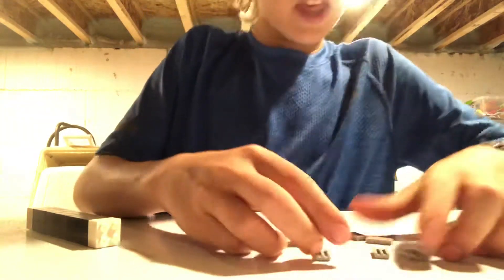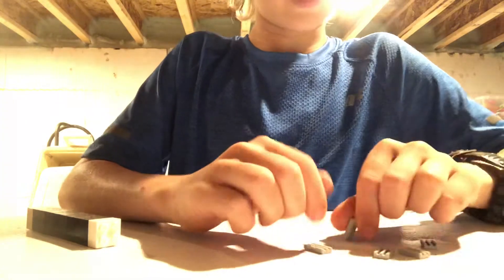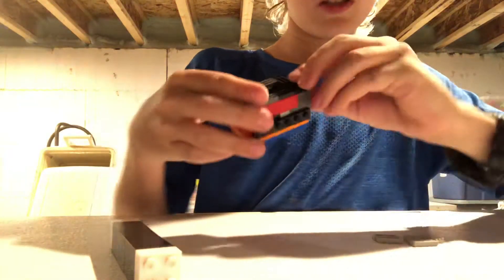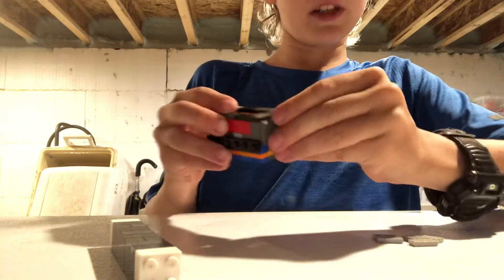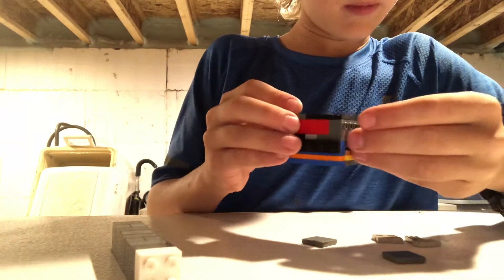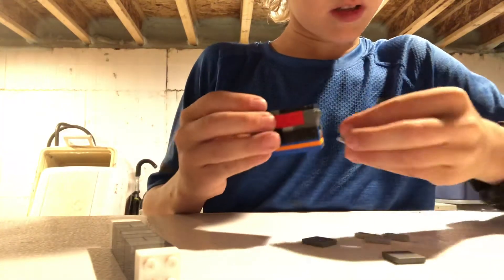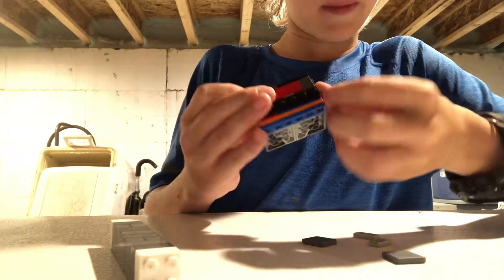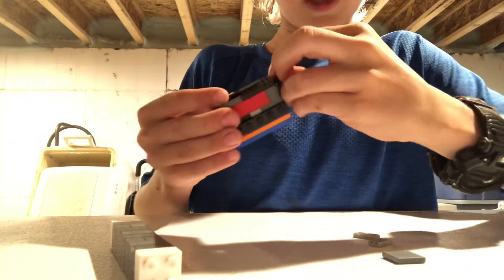Abracadabra alakazam. Five! They instantly multiply with the wave of your magic wand. The secret behind this one is that underneath these there is a secret compartment where three of them are in there. So three are in there and two are up top, the audience doesn't see them.